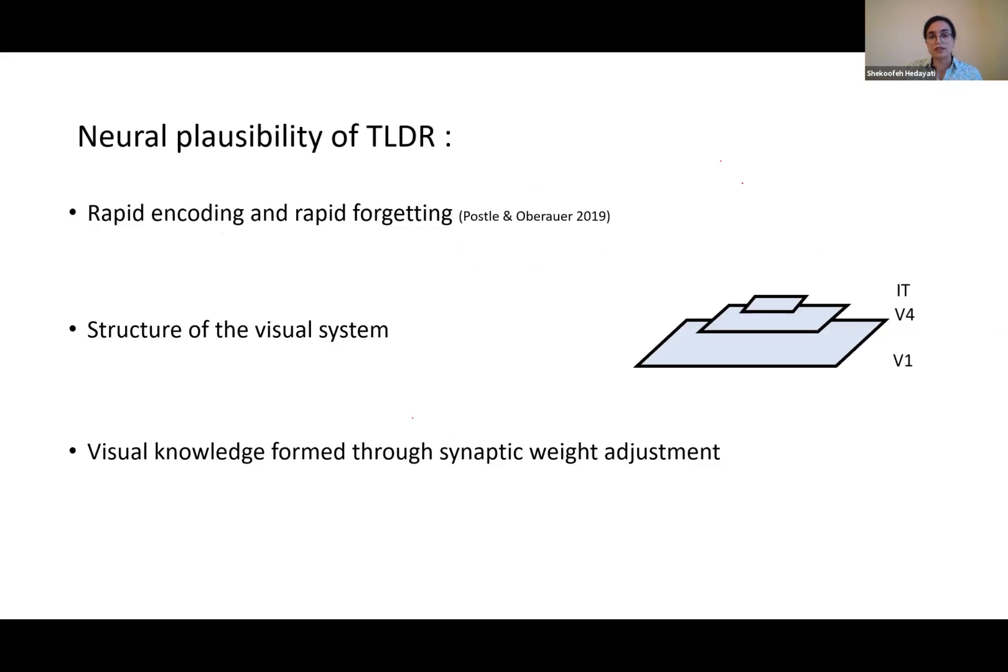What are the neural plausibility aspects of the model? It has rapid encoding and rapid forgetting, which is one of the important characteristics of all working memory because it's been shown that the information working memory stores is activations rather than synaptic weights. That allows for rapid encoding and removing information.